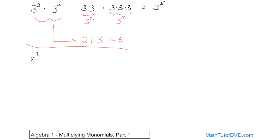For instance, if you have x cubed multiplied by x to the fourth, what would that be? All you do is check that you have the same base, which is x, and the exponents are just going to be added together. So you can write this down as x to the power of 7 without even thinking about it.